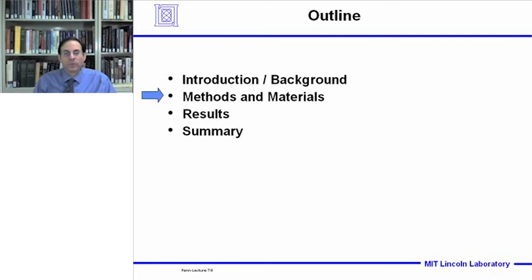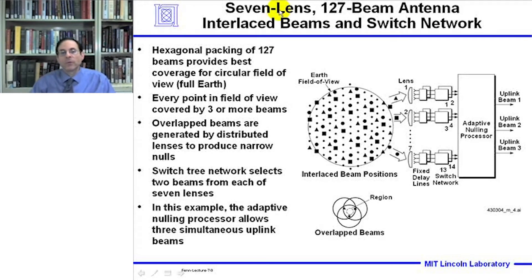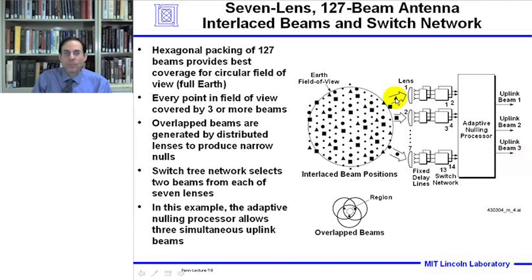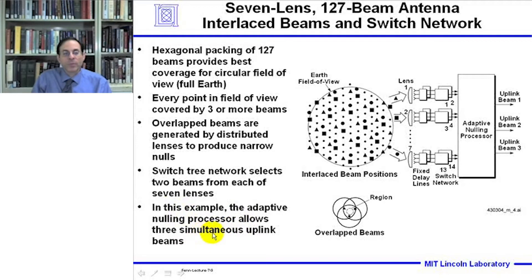Now for methods and materials. We're investigating a 127-beam multiple beam antenna. The Earth's field of view is covered by interlaced beams coming from seven different lenses. Each lens has two outputs generated by a switch network, and these outputs go into an adaptive nulling processor producing three uplink beams. Hexagonal packing of the beams is used, and every point in the field of view is covered by three or more beams. Overlapping beams from distributed lenses produce the narrow nulls desired for high-resolution nulling. The switch tree network selects two beams from each of the seven lenses, and the adaptive nulling processor allows three simultaneous uplink beams.